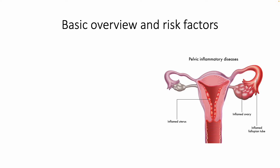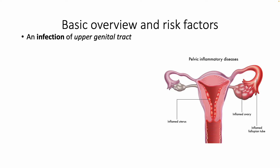Pelvic Inflammatory Disease is an infection of the upper genital tract, which can affect the uterus, the fallopian tubes and ovaries, as you can see on this diagram here.